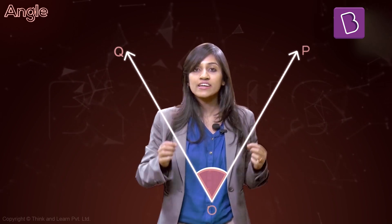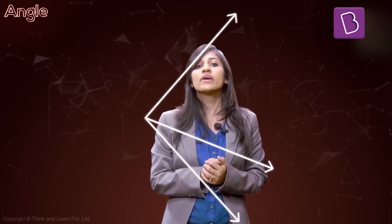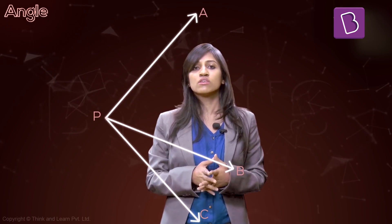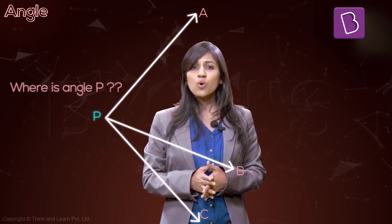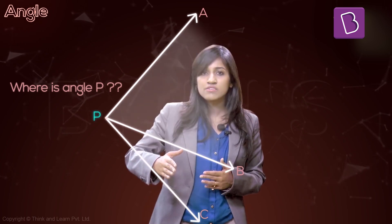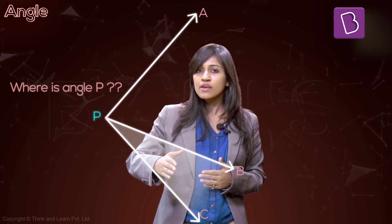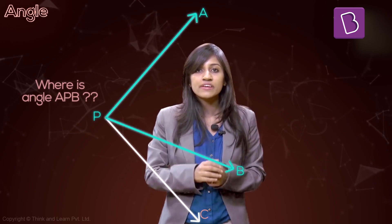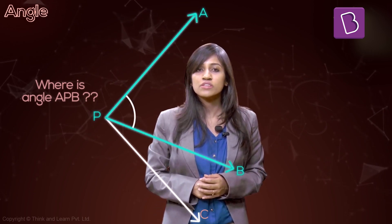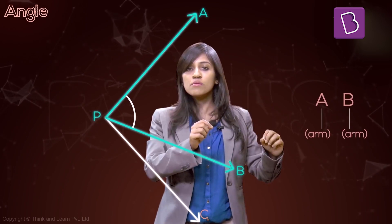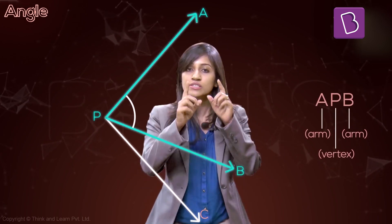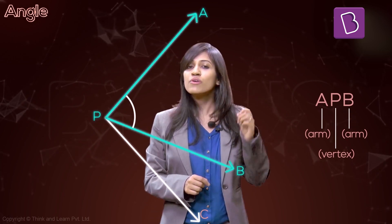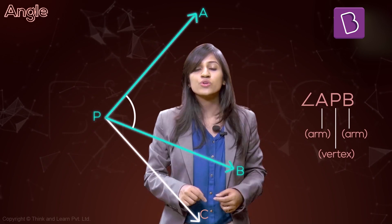Naming an angle correctly is really important. Say you've got some angles like this. Now if I say, tell me where angle P is — would you say it's here? Would you say it's here? You won't be able to tell. But if I say, tell me specifically where angle APB is — now you're able to tell me exactly where it is. So having the names of the arms and the name of the vertex in the middle is important. That's how you name an angle — put a little sign before it, and there you go.